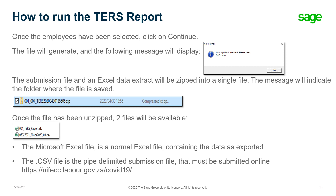Once the employees have been selected, click on continue. The file will generate and a message will display confirming that the zip file has been created, showing the location where you selected to save the file. The submission file and an Excel data extract will be zipped into a single file. Once the file has been unzipped, two files will be available: the Microsoft Excel file, which is a normal Excel file containing the data that has been exported, and the CSV file, which is the pipe-delimited file that will be imported onto the online portal to do the submission.